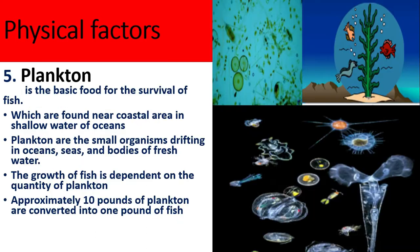The fifth factor is plankton, which is the basic food for the survival of fish. Plankton are found near coastal areas in shallow waters of oceans. They are small organisms drifting in the water of oceans, seas, and bodies of fresh water. The growth of fish is dependent on the quantity of plankton — approximately 10 pounds of plankton are converted into one pound of fish.